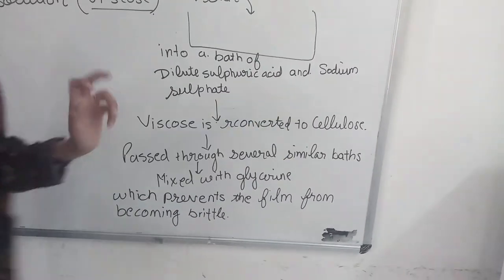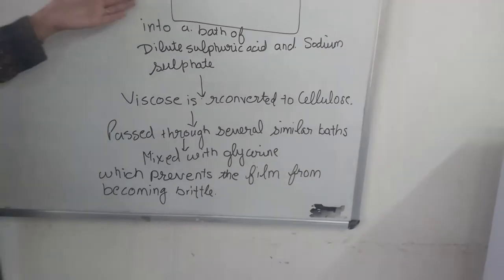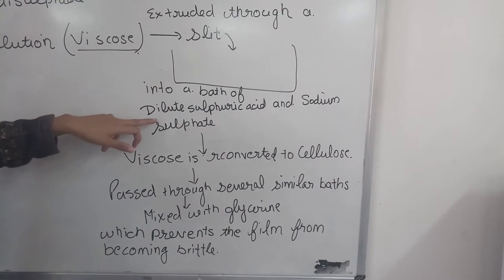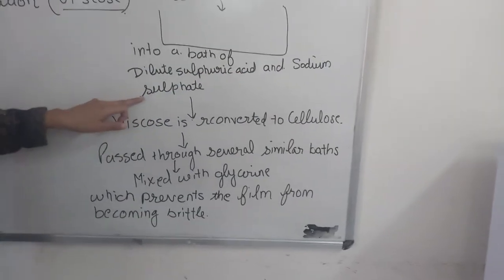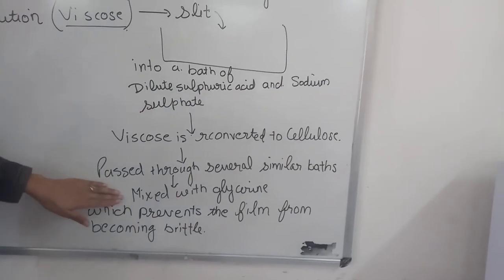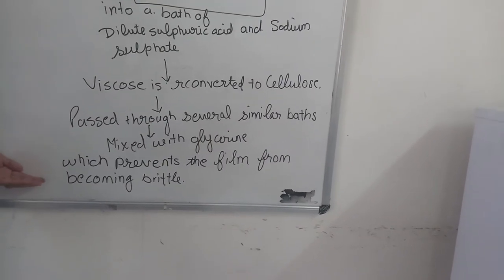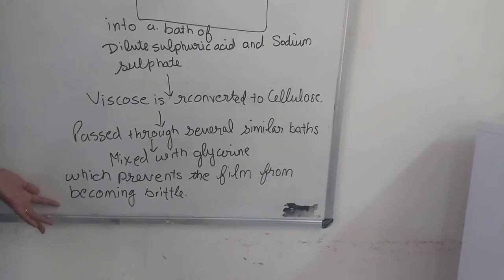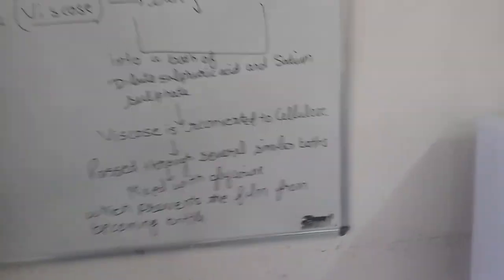This cellulose which we get is passed again and again through different baths of dilute sulfuric acid and sodium sulfate. Thereafter it is mixed with glycerin so that the films become smooth and do not become brittle. So this is all about cellophane.